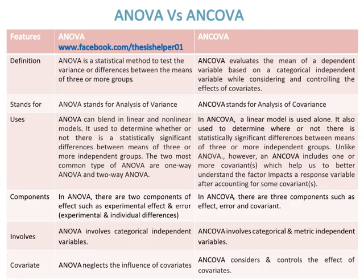The two most common types of ANOVA are one-way ANOVA and two-way ANOVA. In ANCOVA, a linear model is used alone. It is also used to determine whether or not there is a statistically significant difference between the means of three or more independent groups.